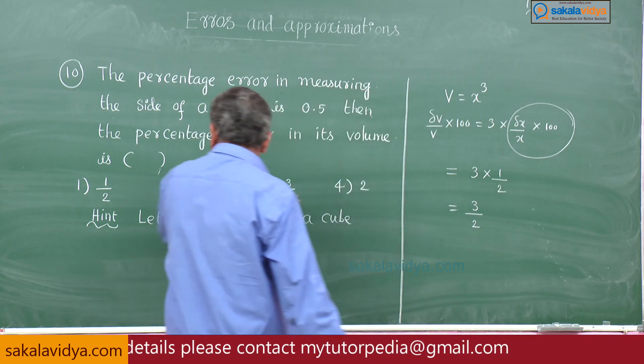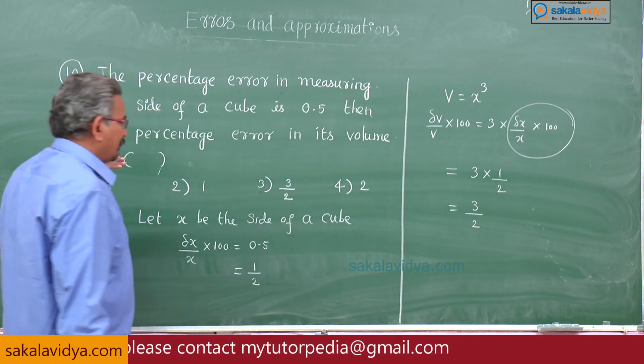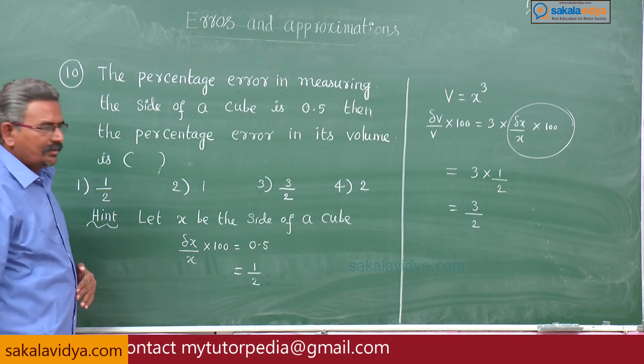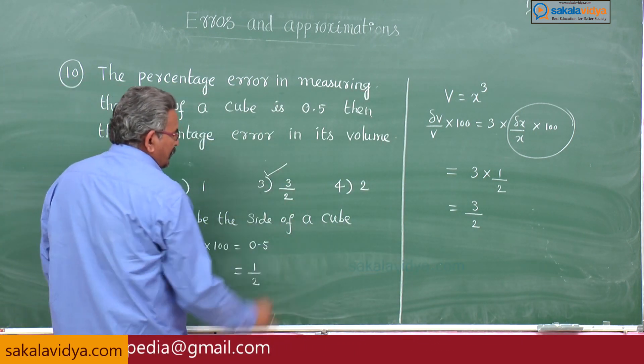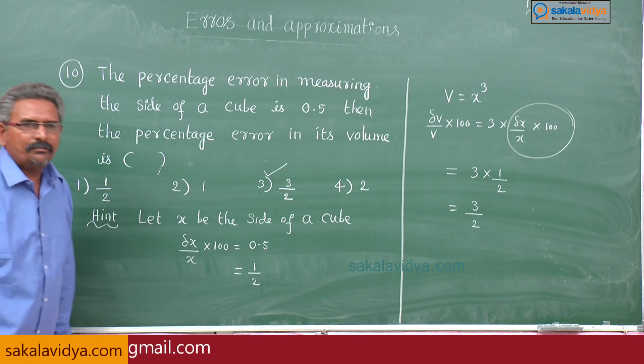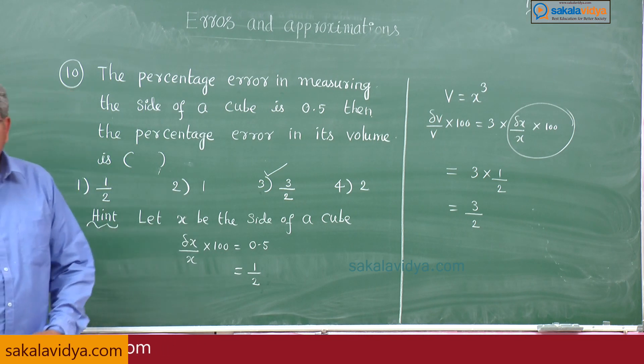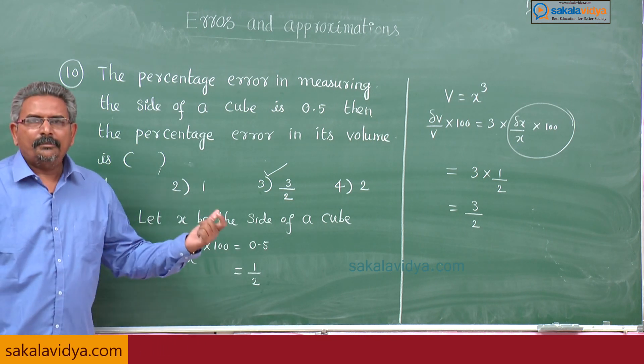So which is the right option? 3 by 2 — sometimes instead of 3 by 2, 1.5 may also be given as the answer option.